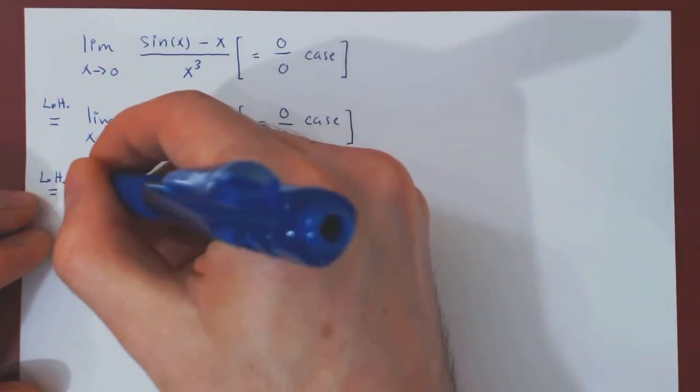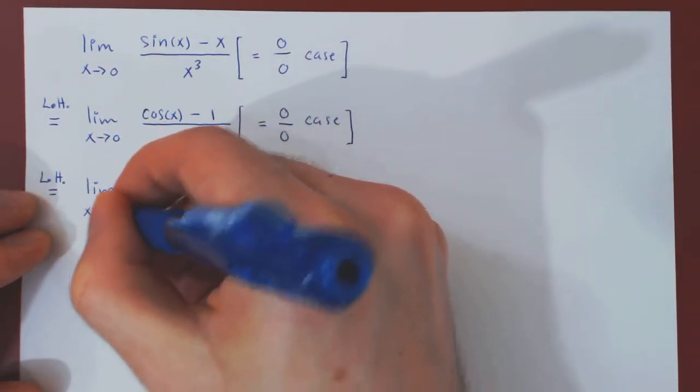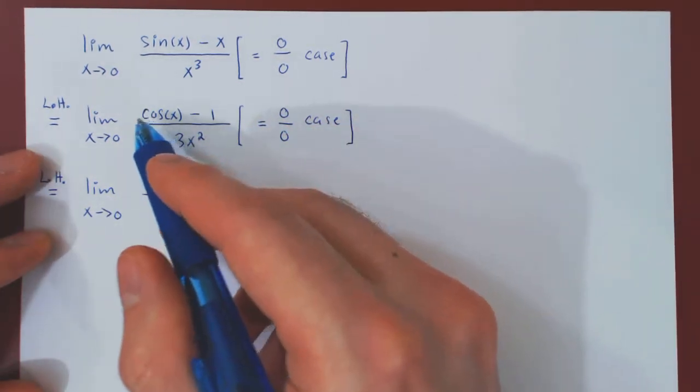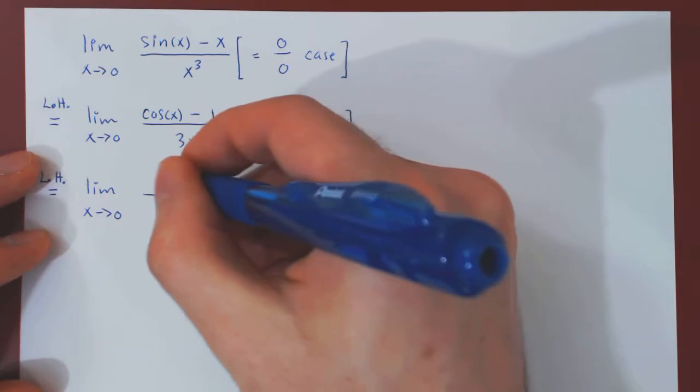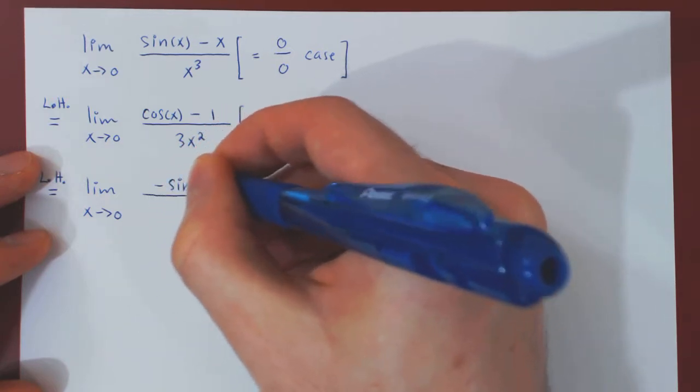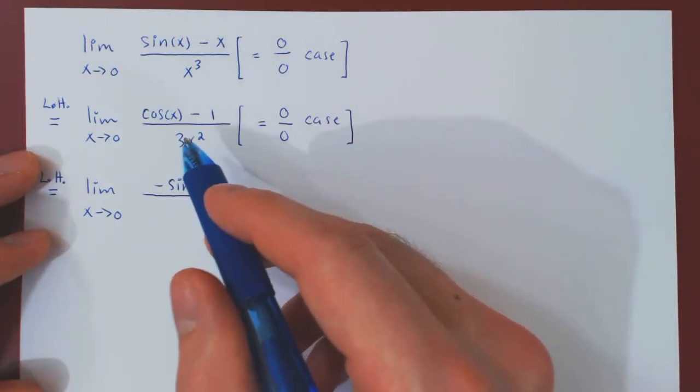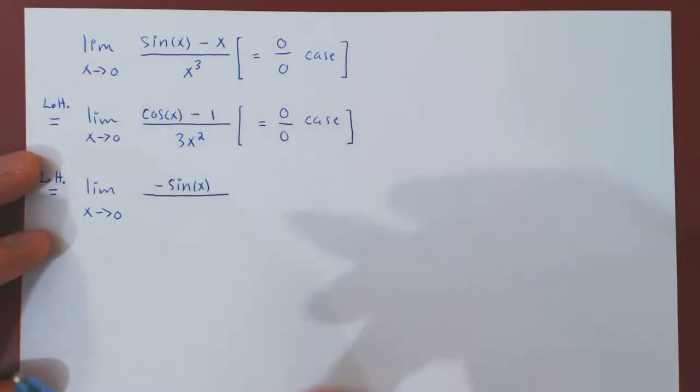Once again, the limit stays the same. And now we replace the numerator by its derivative. The derivative of cos(x) is negative sin(x), minus the derivative of 1, which is 0, so that's gone, over the derivative of 3x squared, which is, of course, 6x.